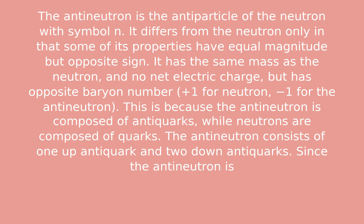This is because the antineutron is composed of antiquarks, while neutrons are composed of quarks. The antineutron consists of one up antiquark and two down antiquarks.